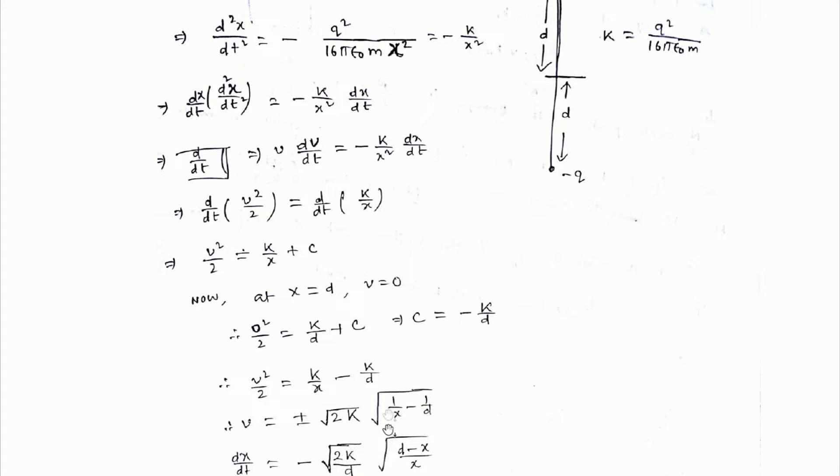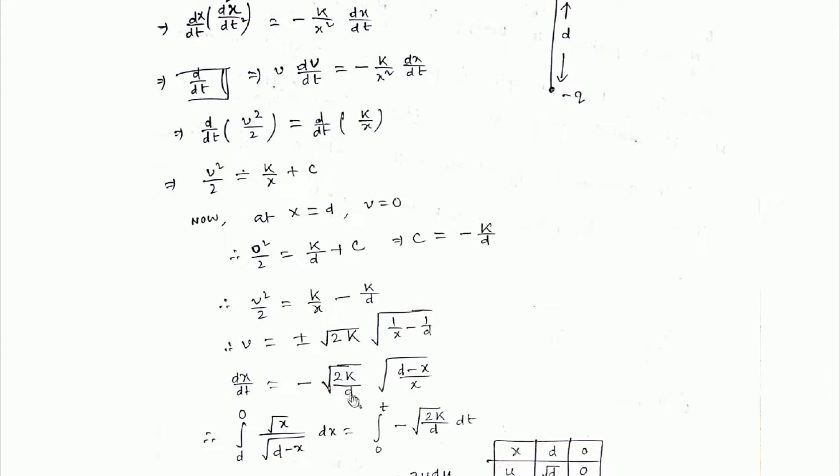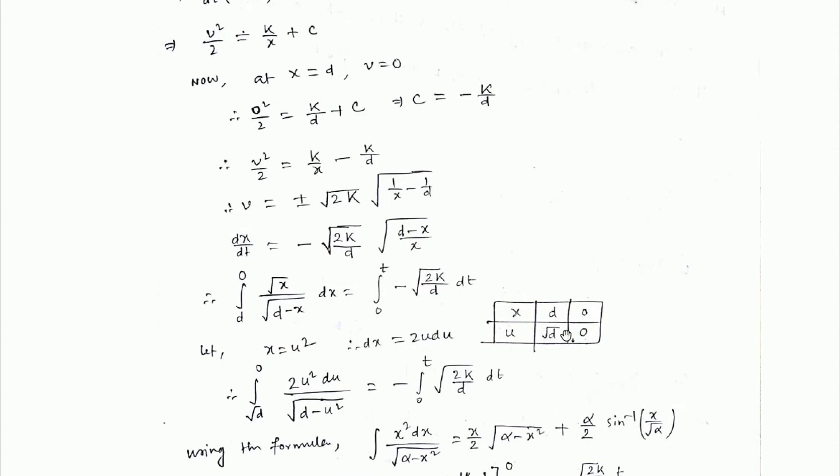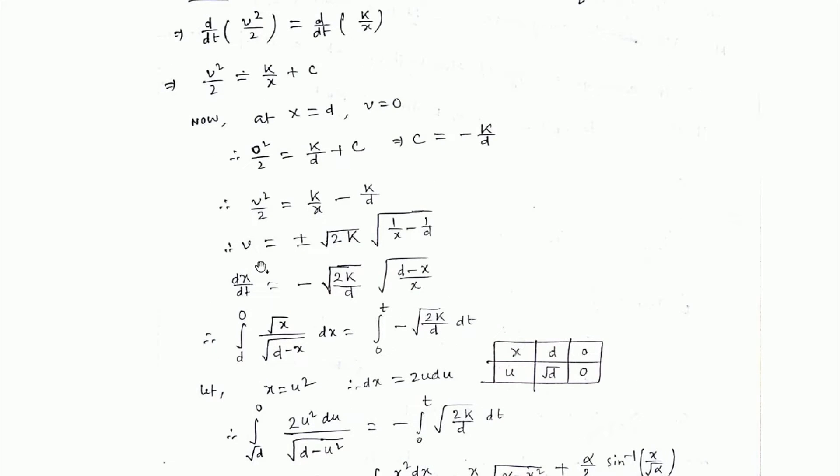From this relationship we get v equals plus or minus √(2k(1/x - 1/d)). We have two options to take, but we are choosing the minus sign.